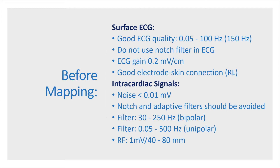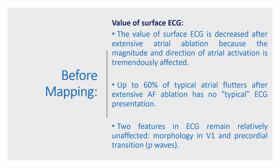The optimal signal amplification on the ablation catheter is 40 to 80 mm per 1 mV. We have to remember that the value of surface ECG is decreased after extensive atrial ablation because the magnitude and direction of atrial activation are tremendously affected. For example, up to 60% of typical atrial flutters after extensive AF ablation have no typical ECG presentation. However, two features remain relatively unaffected: morphology of the P wave in lead V1, and precordial transition of the P waves.